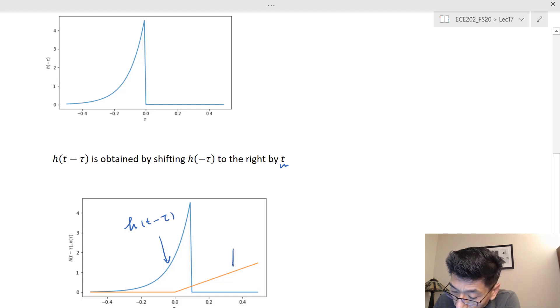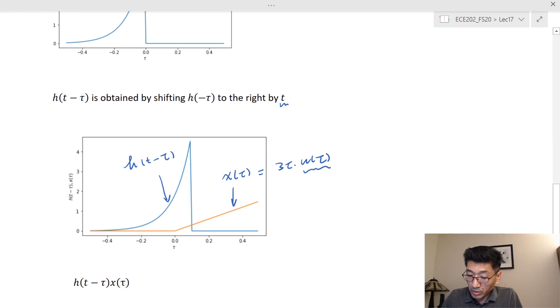And this is the x(tau) I plot. So x(tau) is the ramp function. x(tau) is 3 times tau u(tau). And the u(tau) is basically doing, when this is negative, the x(tau) is zero. That's what this step function is doing. Otherwise, x(tau) would just extend to the negative with the same slope.